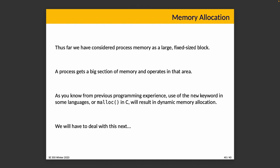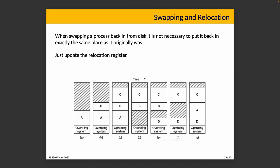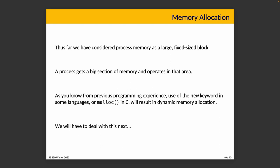Thus far we've talked about process memory as if it's a large fixed-size block. But from programming experience, when you use the 'new' keyword or malloc, you get more memory dynamically — you're not stuck with a fixed block. You can just request more memory, though you might not always get it if you ask for a ridiculous amount. So in our next topic, we're going to talk about dynamic memory allocation as opposed to thinking of just big blocks.